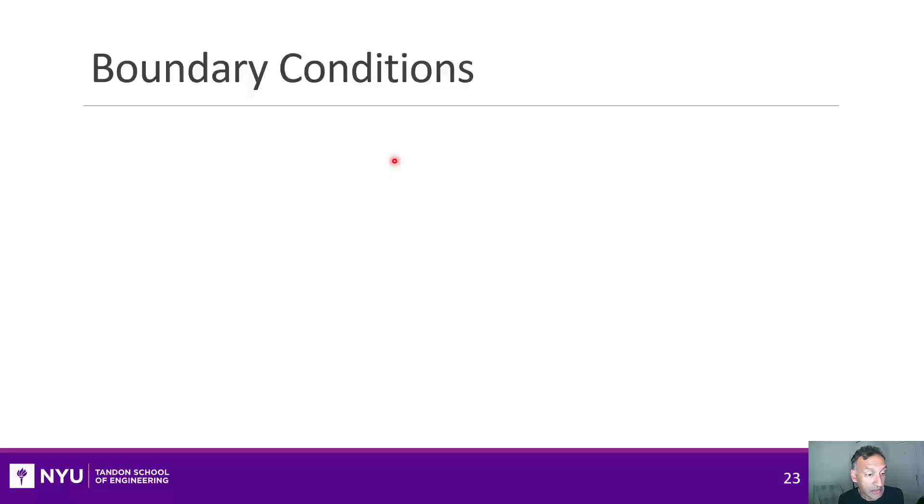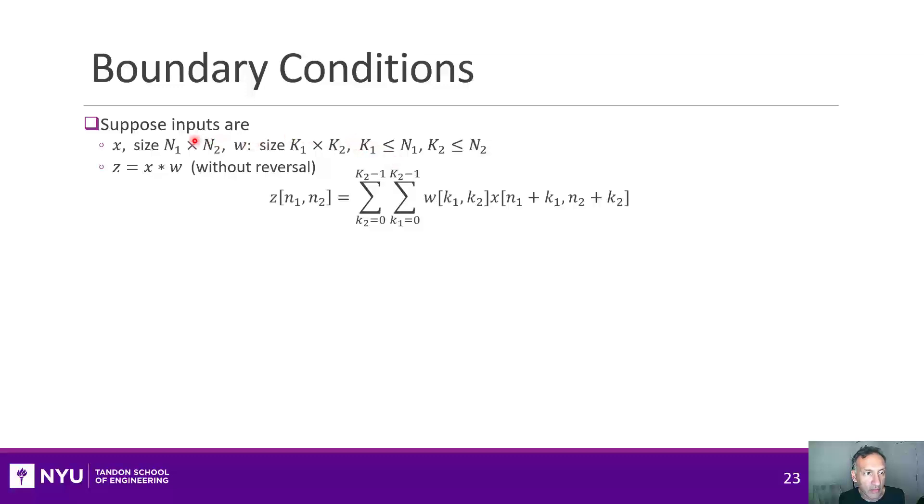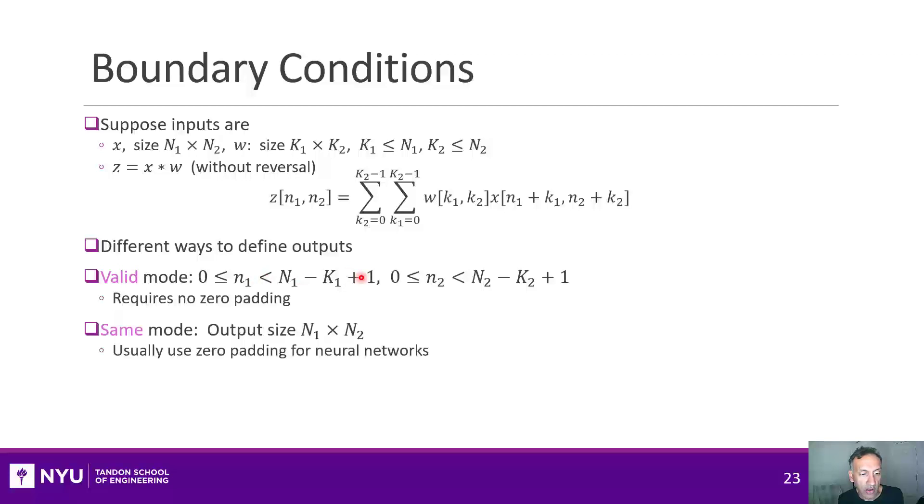Another minor point we have to deal with, with convolutions or correlations is boundary conditions. Let's say I have an image that's N1 by N2, and my filter is K1 by K2, and I can compute this sum. Now, the question is, what are the outputs, what are the range of outputs for this output? And there's a few different ways that most packages will support. One way is called the valid mode, where I only slide that window over the valid range of the pixels. In this case, I get a smaller output than the input. The second is where I slide it to get the same output as the input shape, but I have to do some zero padding for this. And finally, I can zero pad both sides and get an output that's larger than the input.